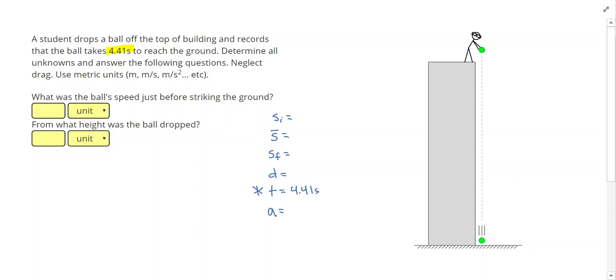However, I know that there have to be at least two more givens in order for me to solve the problem. So first, just by looking at the picture, I notice that at the start of the problem, the student is holding the ball, and that means that my speed is going to start at zero, so I have an initial speed of zero as my second given.